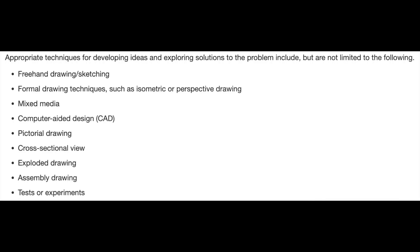The very best work on Criterion B is going to demonstrate insight and originality. It's going to display innovative ideas that are presented using a selection of appropriate techniques and focused annotations. Here's a list of appropriate techniques for developing ideas and exploring solutions to the problem — not limited to this list, but pretty comprehensive: freehand drawings and sketching (recommended for initial design ideas), formal drawing techniques such as isometric and perspective drawing, mixed media, CAD, pictorial drawings, cross-sectional views, exploded drawings, assembly drawings, and tests or experiments.